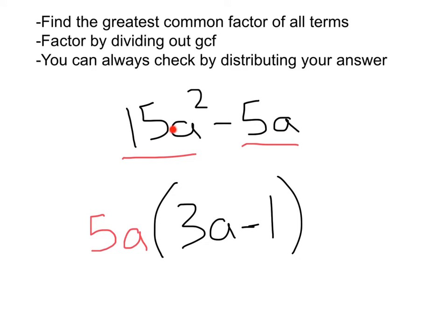And you can see that dividing that 5a out, 5a times 3a gives us 15a squared. And then 5a times 1 is going to be minus 5a. Perfect.